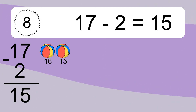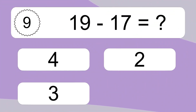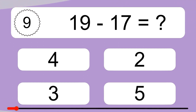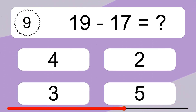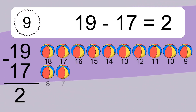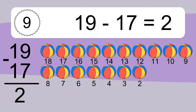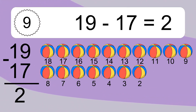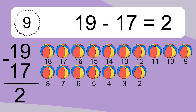19 minus 17 equals what? 19 minus 17 equals 2. Let's count it: 18, 17, 16, 15, 14, 13, 12, 11, 10, 9, 8, 7, 6, 5, 4, 3, 2.